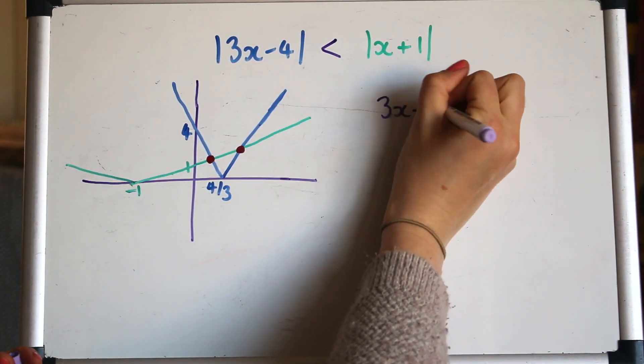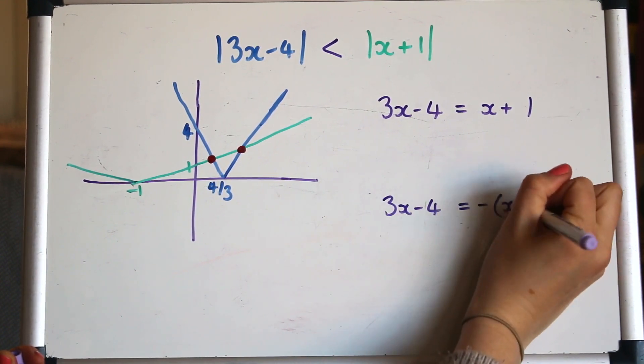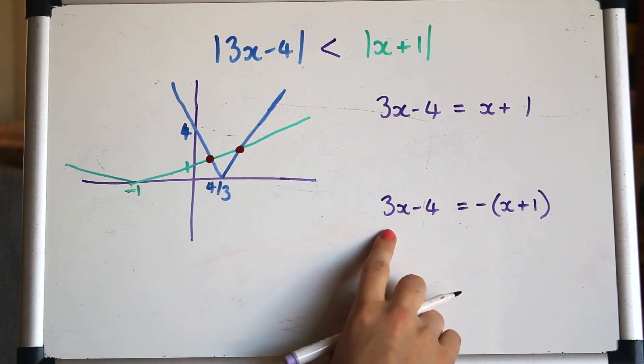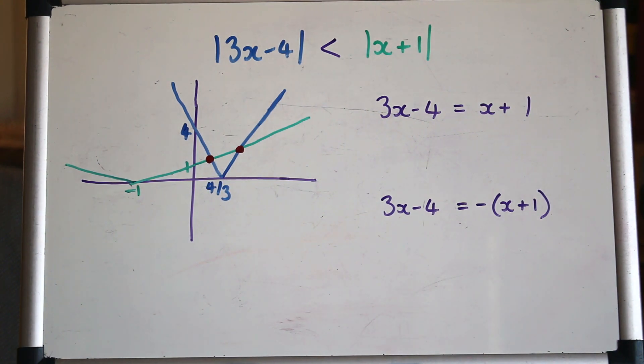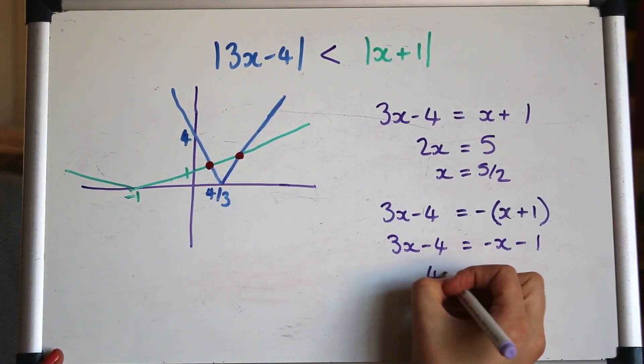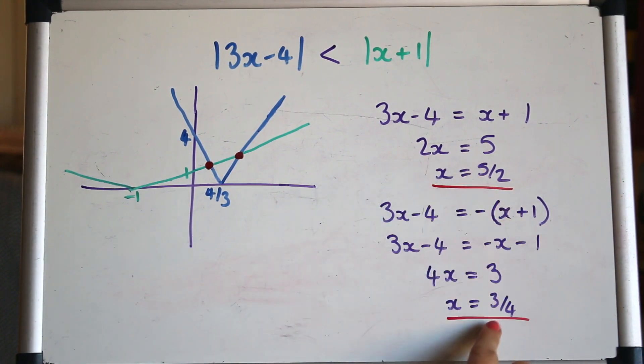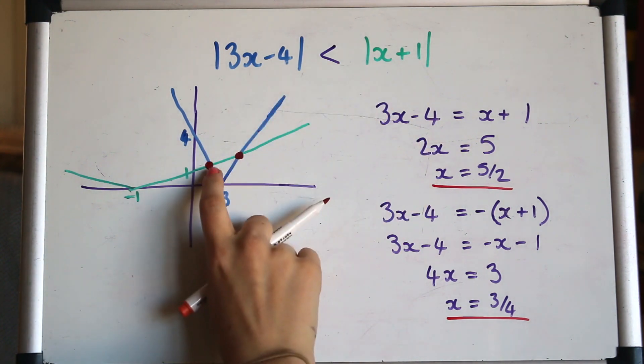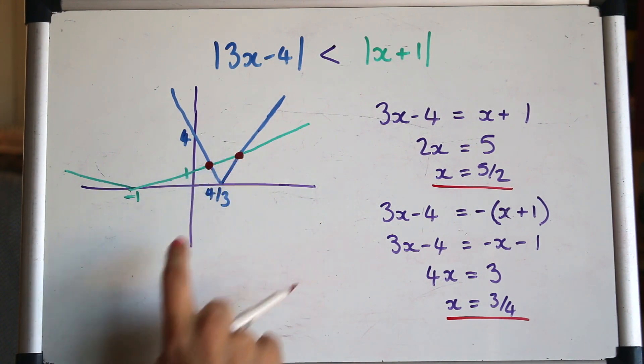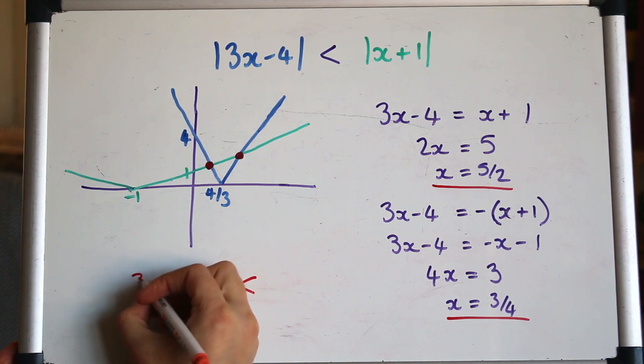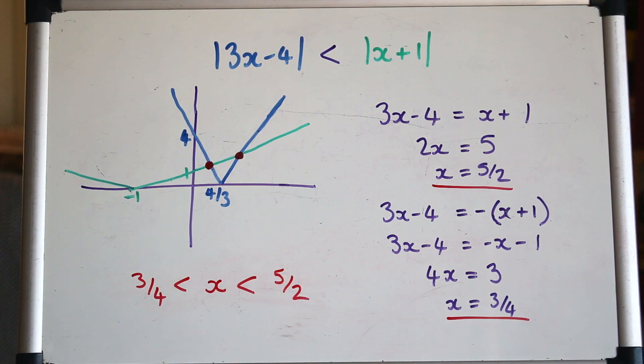So setting up two equations like before. And when you do this, by the way, it doesn't actually matter which one you make negative. You could just multiply that side by minus 1 and make that side negative, so it doesn't matter which one you choose. Let's solve those now. So we've found the two x values of where they cross, and this time we're looking for where the blue is less than the green. So the blue is underneath the green when we're in between those two x values. So the solution will be when x is between those two numbers that we found, so 3 quarters and 5 over 2. And that's it.